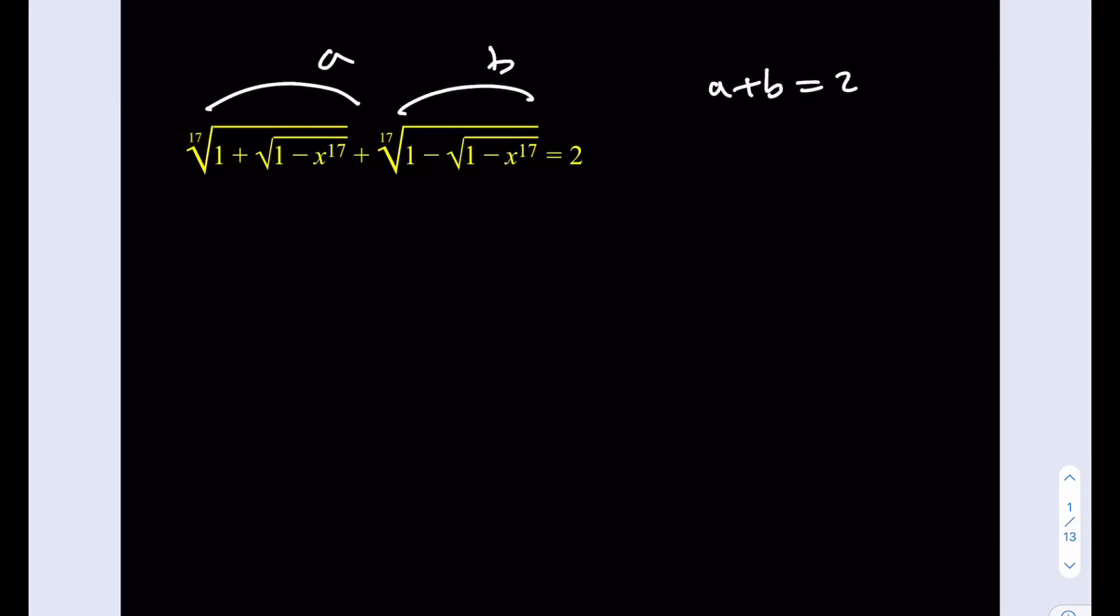So let's say this is called a and this is called b, and then a plus b is equal to 2. Then what else can we get from here? Well, the 17th root of something is equal to a, so I can raise both sides to the 17th power. That gives me a to the power 17 is equal to 1 plus square root of 1 minus x to the 17th. And the same thing for b. Then I can add these up and the radicals are going to cancel out, giving a to the 17th power plus b to the 17th power is equal to 2.